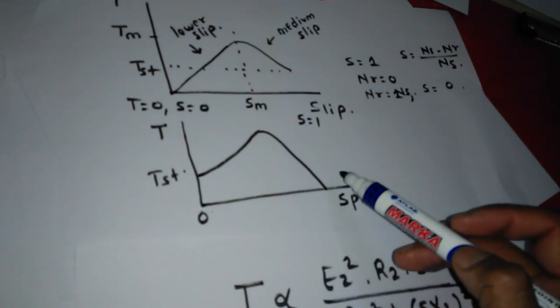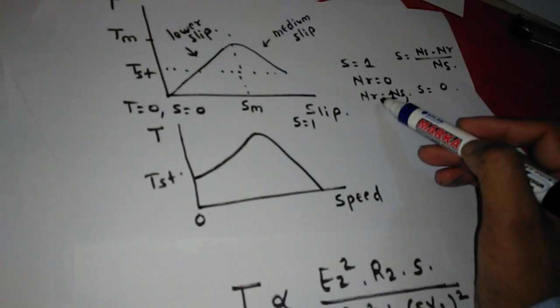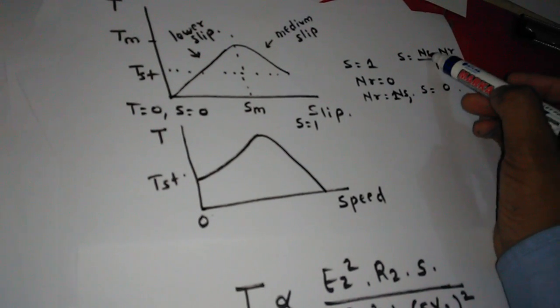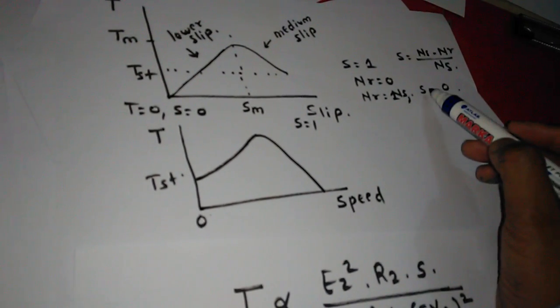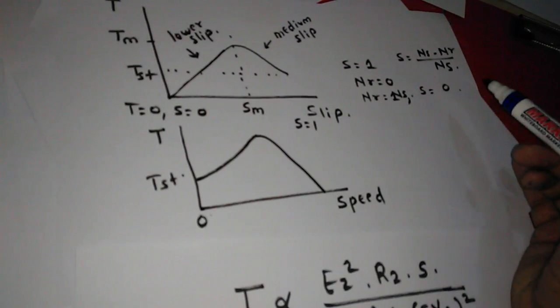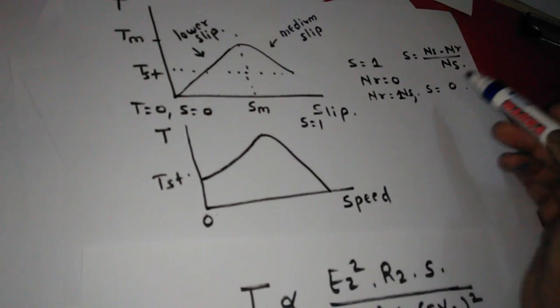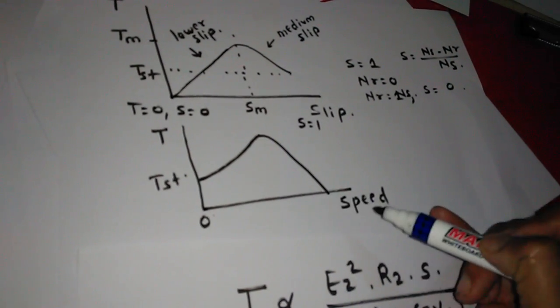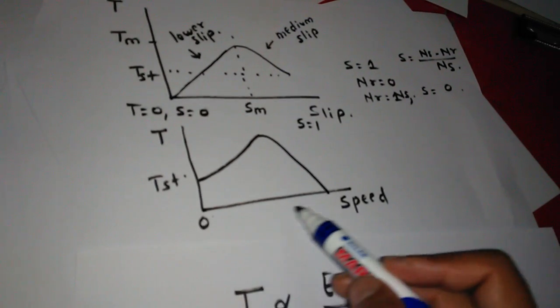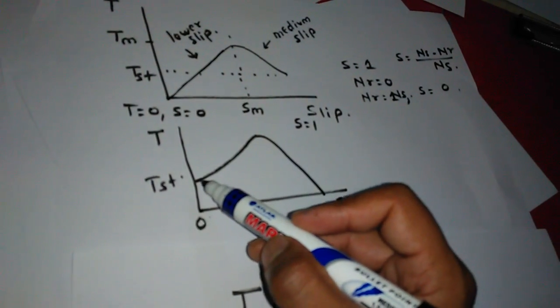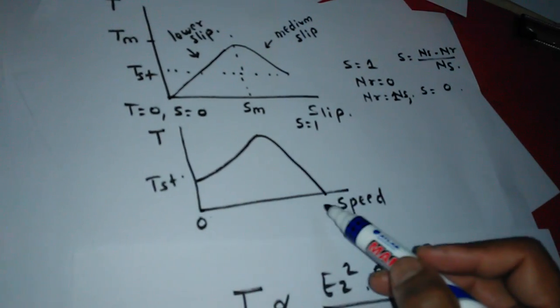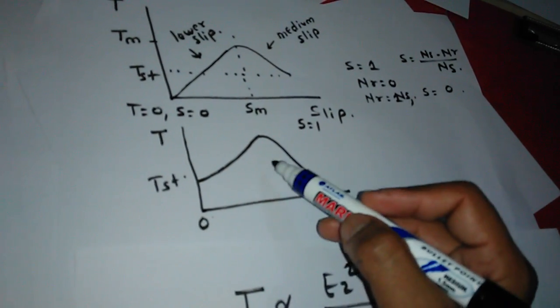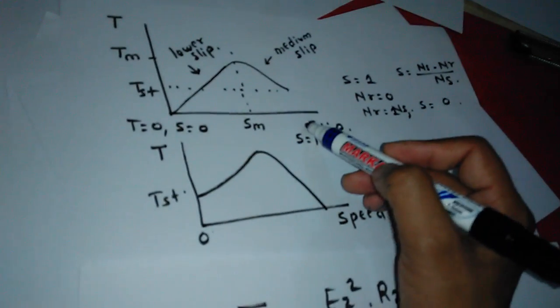When Nr equals Ns, the synchronous speed, Ns minus Nr will be 0 because Nr equals Ns. So S equals 0. In that case, slip is 0. Speed increases as we see the starting torque is here. This is the torque-speed characteristics, which is different from the torque-slip characteristics. Thank you.